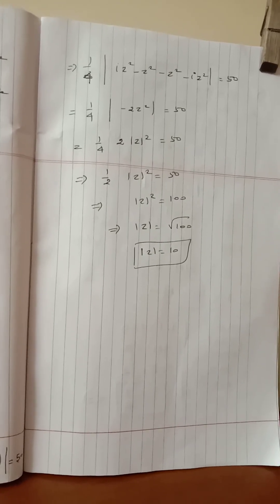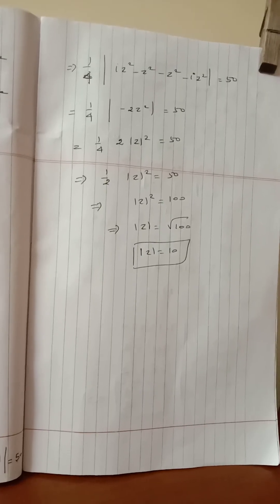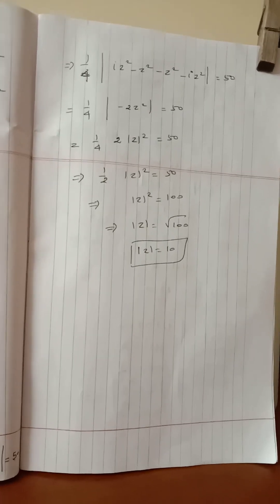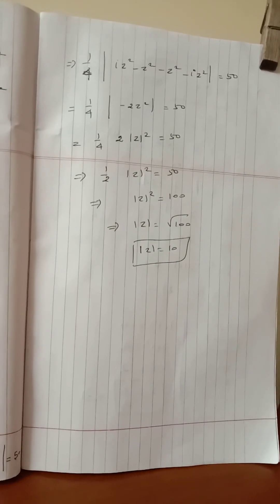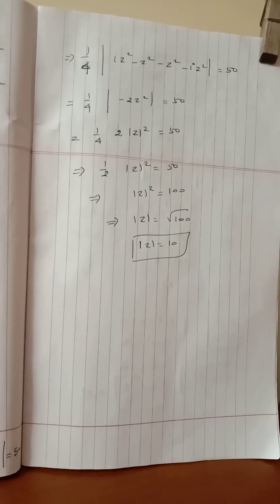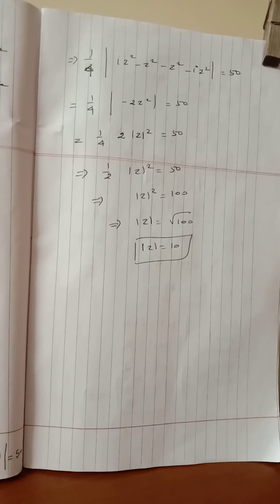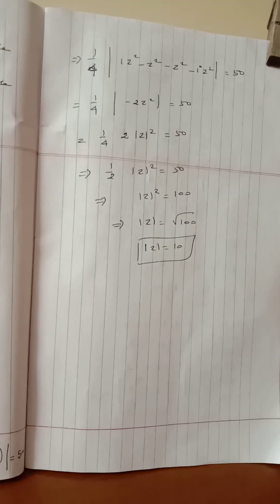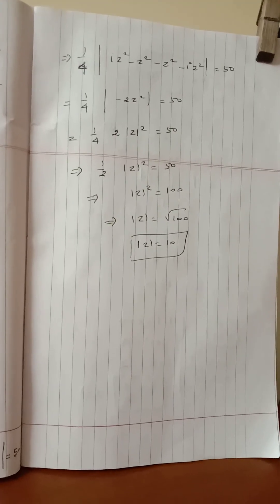1/2 into modulus of z square equals 50. Cross-multiplying, modulus of z square equals 100, so modulus of z equals root 100, and the value is 10.